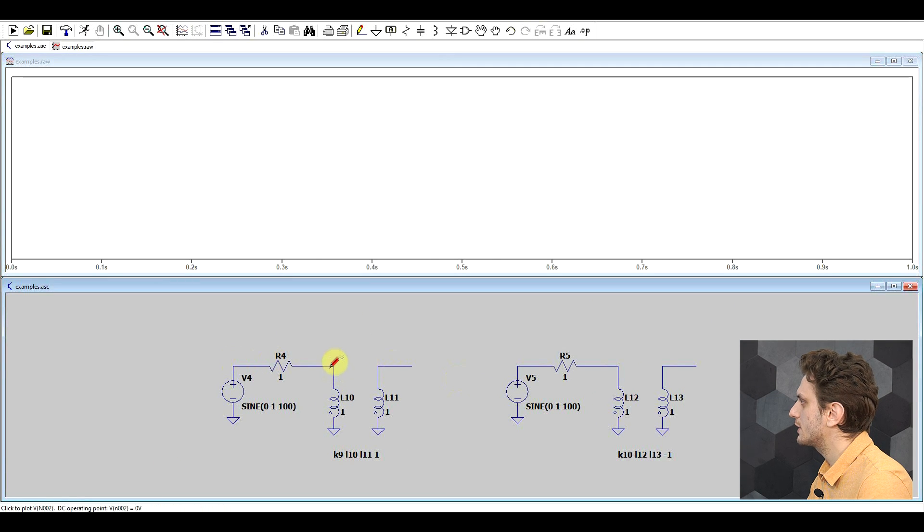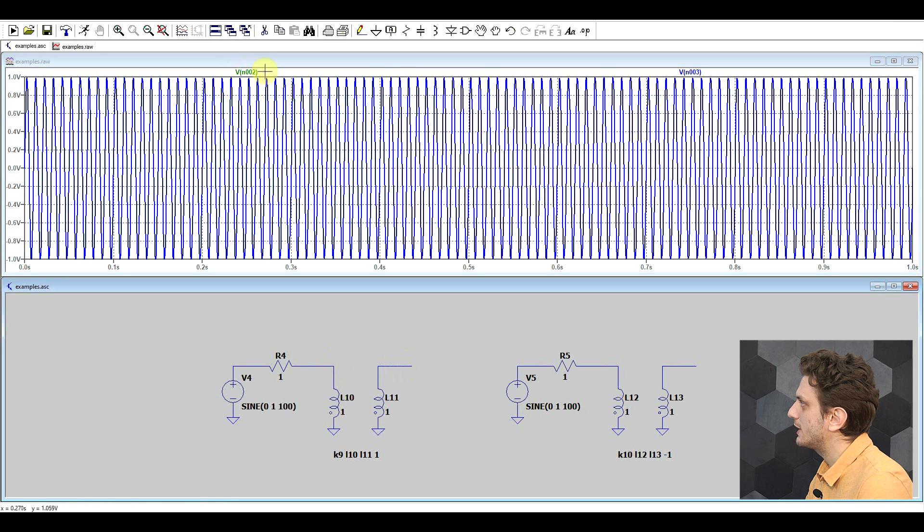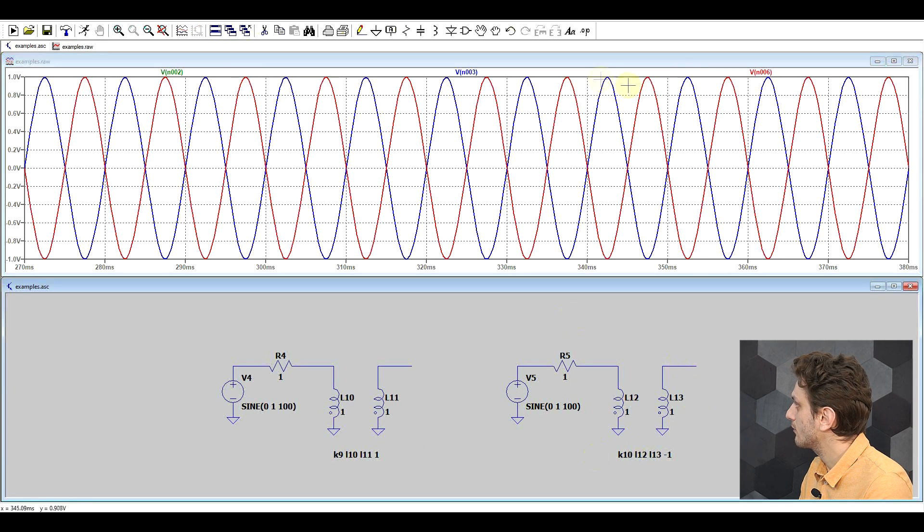If we run the circuit we can see that we have a certain signal applied. In the first case we have the exact same signal on the other side. So the two signals are in phase. Whereas with the second transformer the secondary side is 180 degrees out of phase.